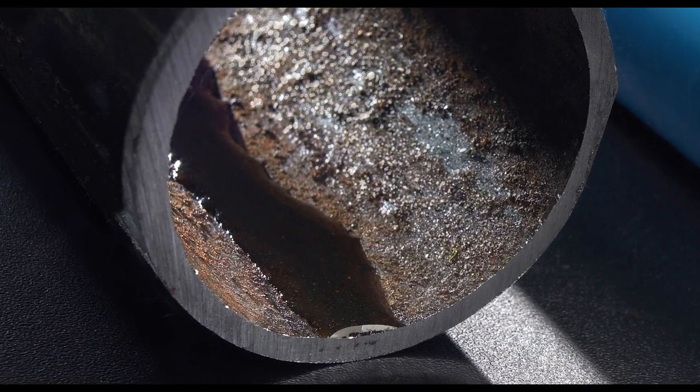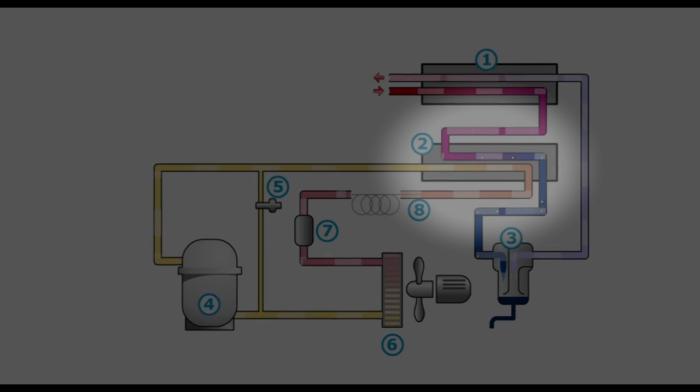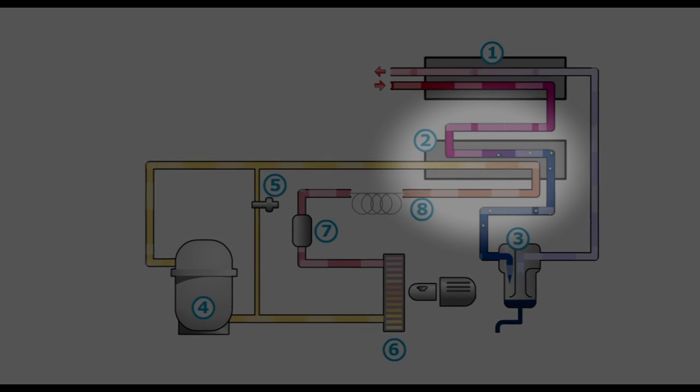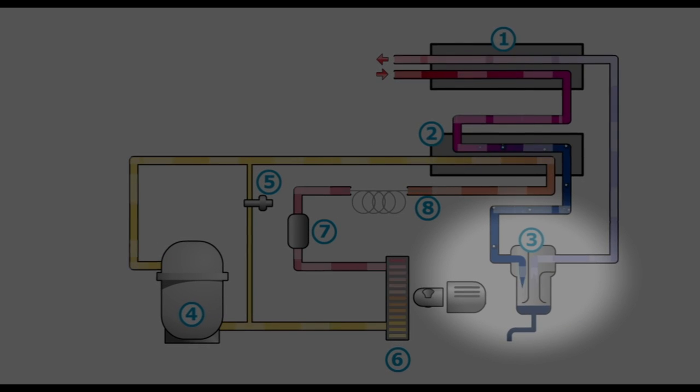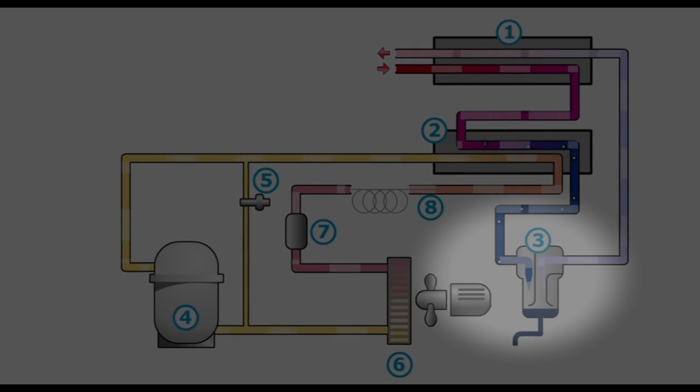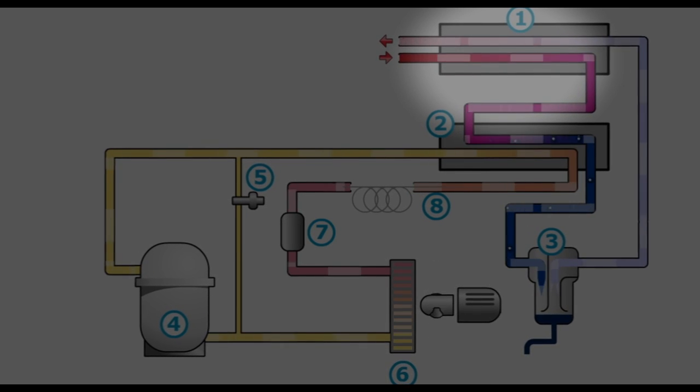A refrigerant dryer removes the moisture from compressed air by cooling the air to near freezing point, which condensates the water. The condensate is then automatically drained. The dry air is warmed up before leaving the dryer through the air-to-air heat exchanger.